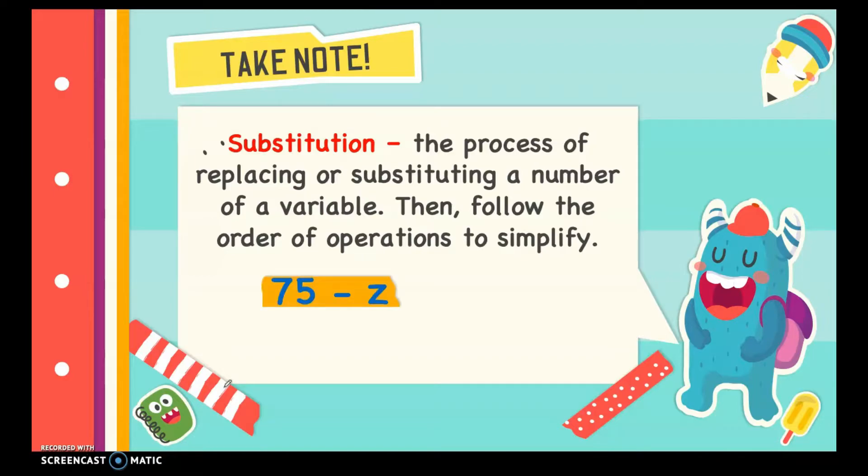For example, we have 75 minus z. When z is equal to 25, what is the value of this expression? We substitute the value which is 25 for the variable z. So, we have 75 minus 25 that is equal to 50.